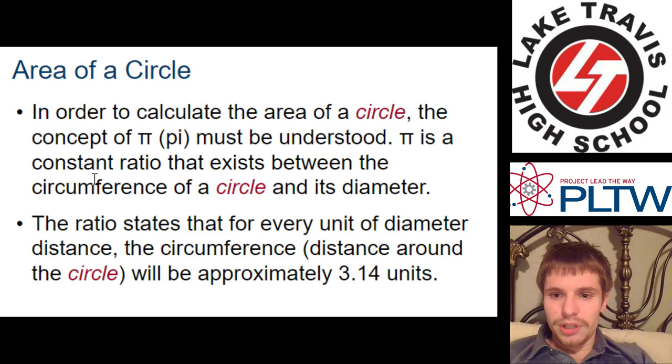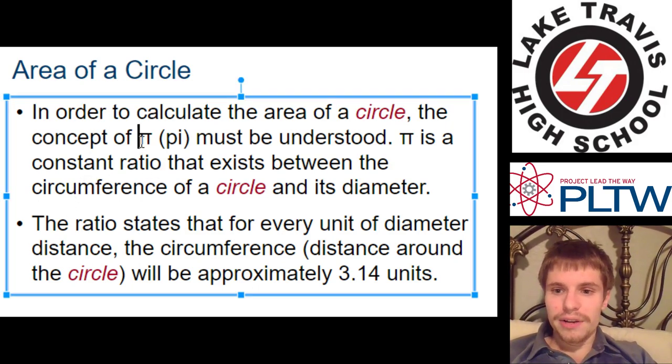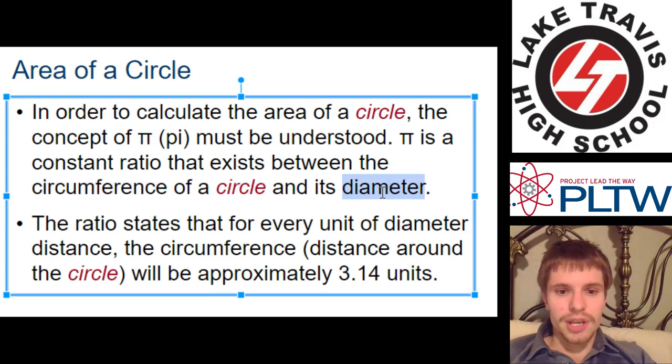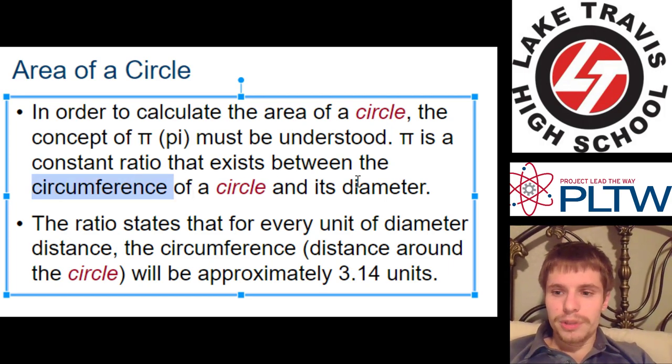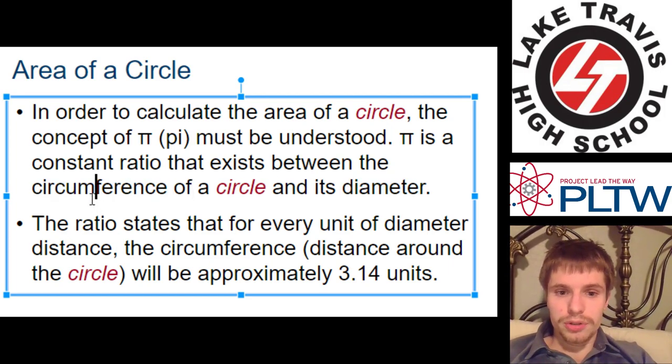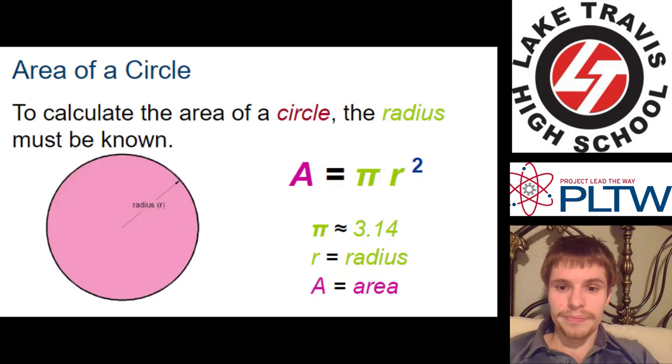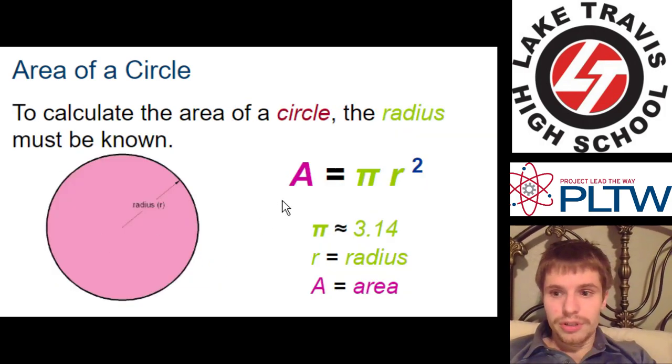The area of a circle is going to be talked about in a second. But pi right here, I've always wondered what pi is. It's just a ratio between circumference and diameter. So many measured circumferences of a bunch of circles and diameters of a bunch of circles and found out that it's perfectly linear. And the ratio, the slope there is exactly equal to pi.